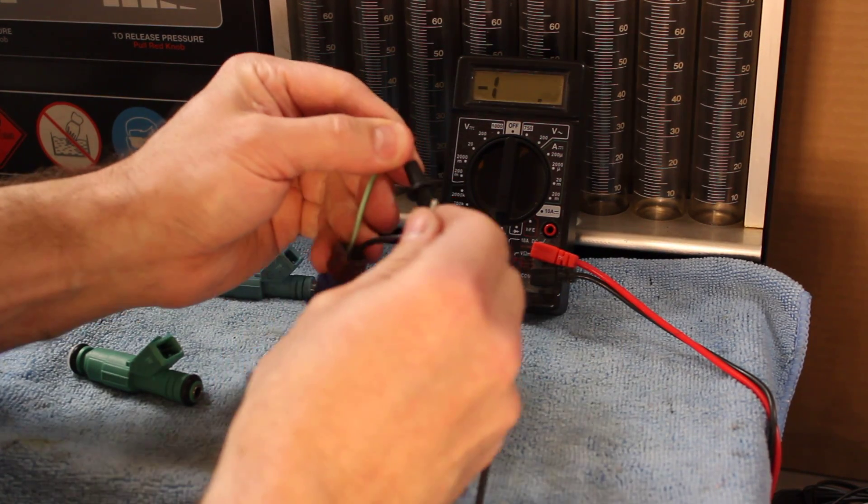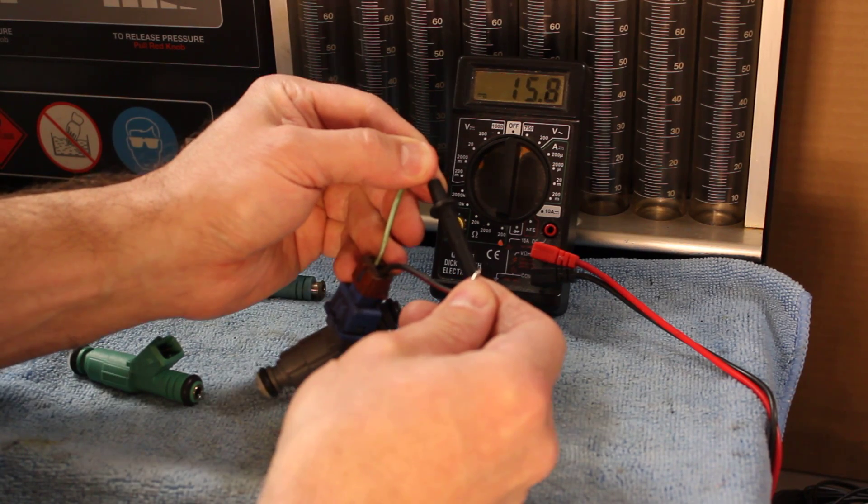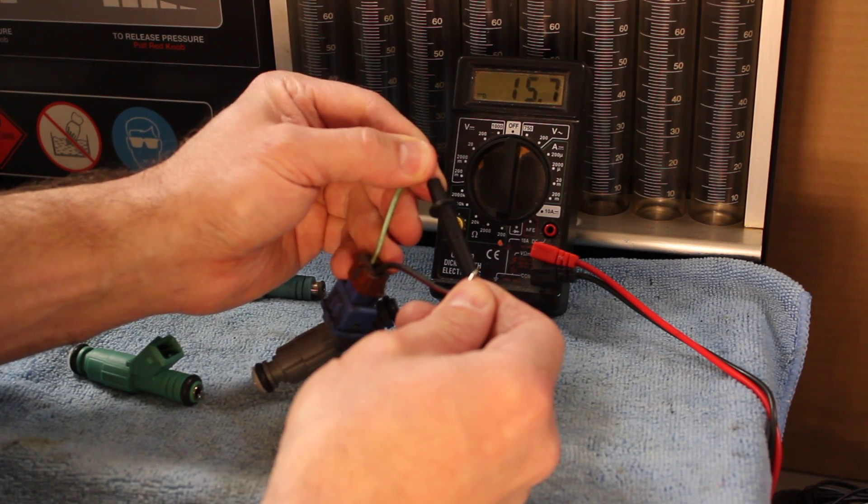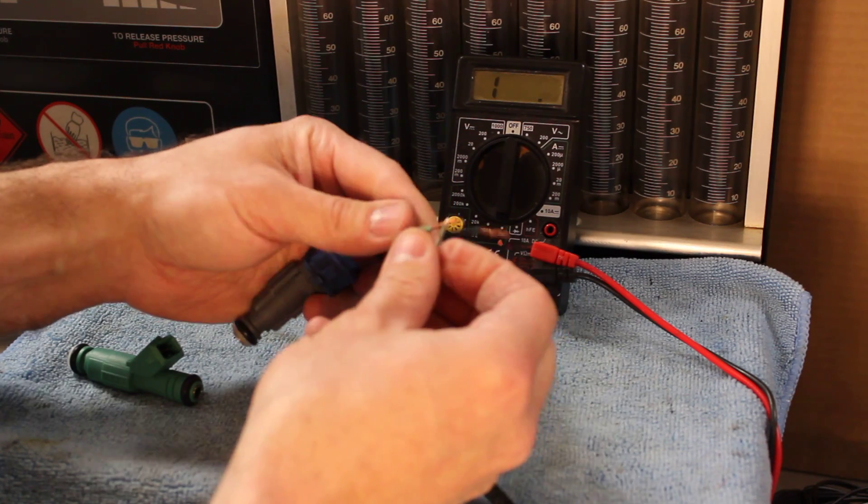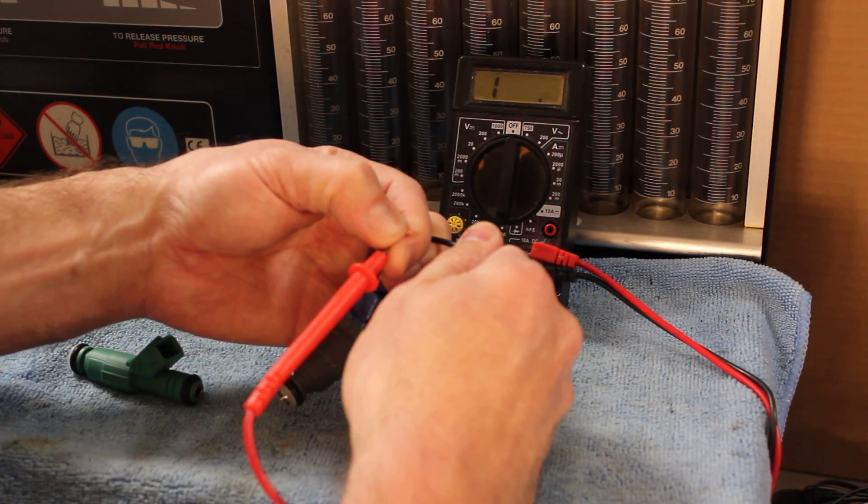There is a plus and a minus on an injector, but when checking the ohms, it doesn't matter—you can check either side. You'll still get the same result if we switch it around. You'll still get that same figure.